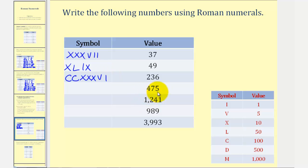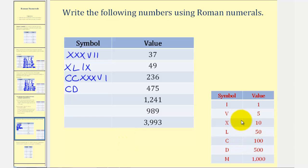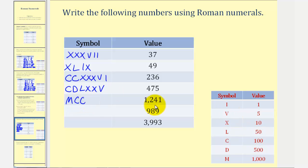For four hundred seventy-five, we'll start with four hundred. We'll have to use the subtraction principle — we'll put a C before the D for five hundred minus one hundred. So there's four hundred. And then for seventy, we'll use fifty plus ten plus ten, or L, X, X. For five, we'll use a V. Next, for one thousand two hundred forty-one, we have M for one thousand, two C's for two hundred. For forty, we'll have to use an X before an L — that's fifty minus ten, that's forty — and there's the one.